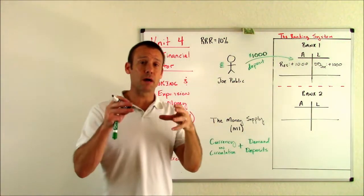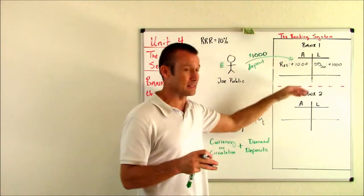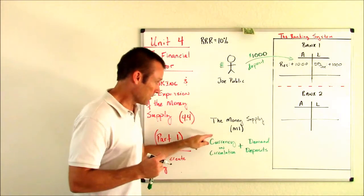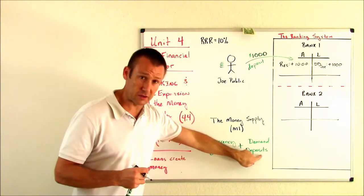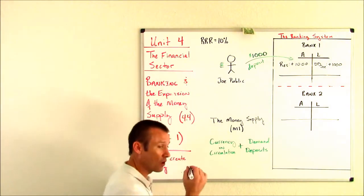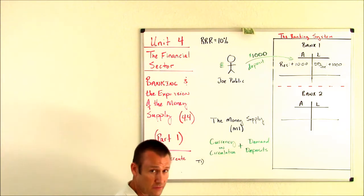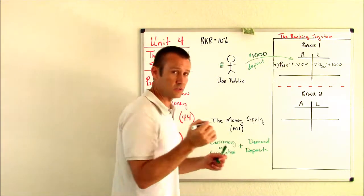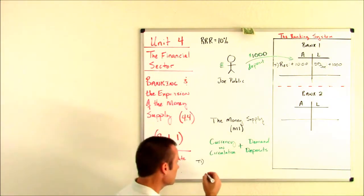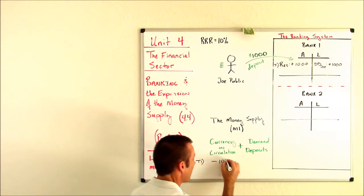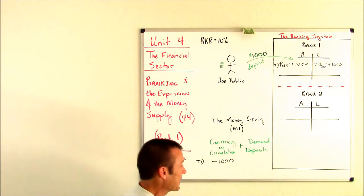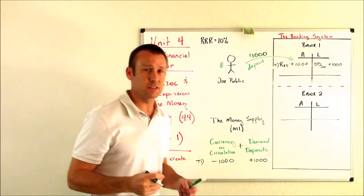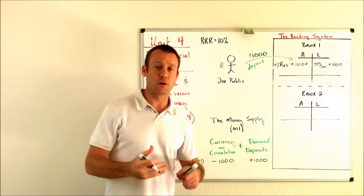Did the money supply change from the deposit? The answer is no. Why is that? Well, the money supply again is currency in circulation and demand deposits. I'm going to call this deposit T1 for transaction one. Transaction one is the deposit. Currency in circulation went down by $1,000. Demand deposits went up by $1,000. The money supply did not change from the deposit.